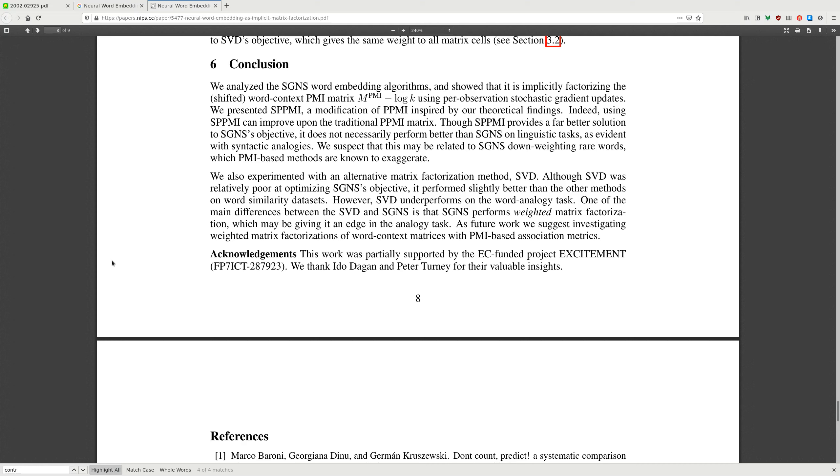We suspect that this may be related to SGNS down-weighting rare words, which PMI-based methods are known to exaggerate. We also experimented with an alternative matrix factorization method, SVD. Although SVD was relatively poor at optimizing the SGNS objective, it performs slightly better than the other methods on similarity datasets. However, SVD underperforms on word analogy tasks. One of the main differences between SVD and SGNS is that SGNS performs weighted matrix factorization, which may be giving it an edge in the analogy tasks. As future work, we suggest investigating weighted matrix factorization of the word-context matrices with PMI-based association matrices.